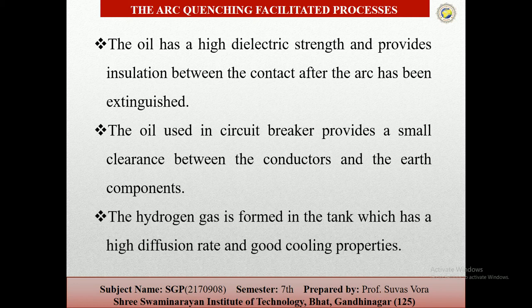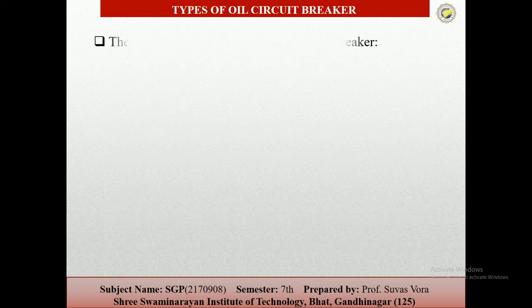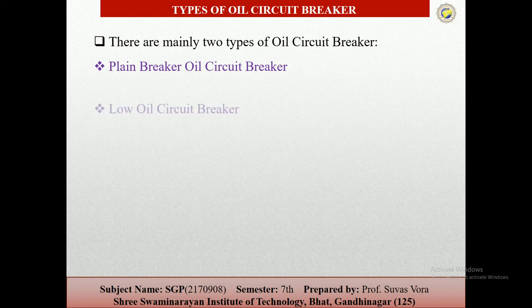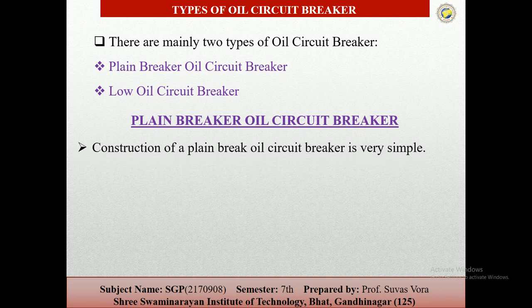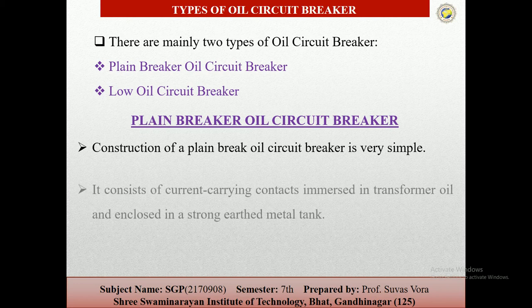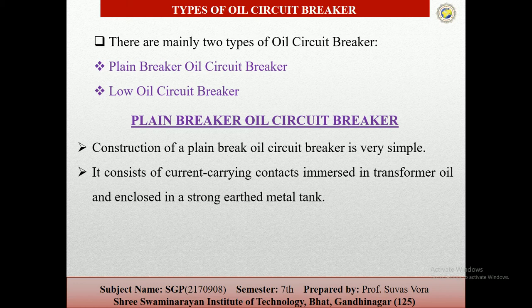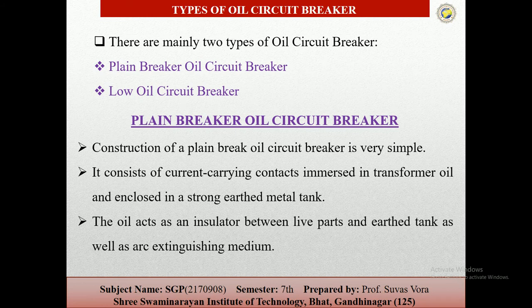Hydrogen gas is formed in the tank, which has a high diffusion rate and good cooling properties. This hydrogen gas or oil is used in the circuit breakers. Basically there are two types of oil circuit breakers: the first one is the plain oil circuit breaker and the second is the low oil circuit breaker. The construction of the plain circuit breaker is very simple, and it consists of current-carrying conductors immersed in transformer oil and enclosed in a strong earthed metal tank. The oil acts as an insulator between the live parts and the earthed metal tank, as well as the arc extinguishing medium.